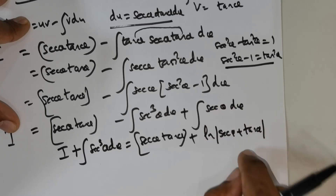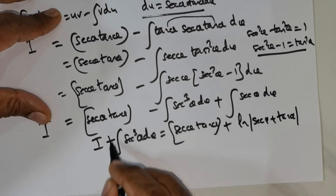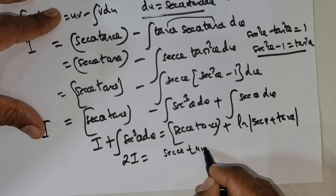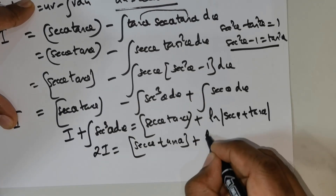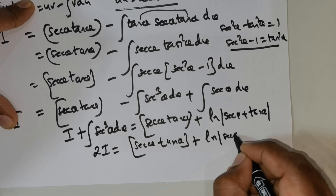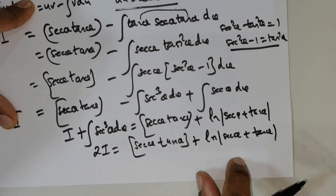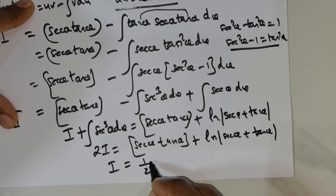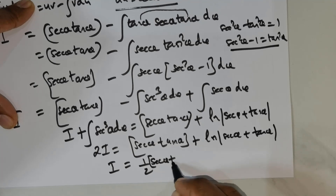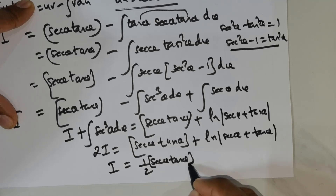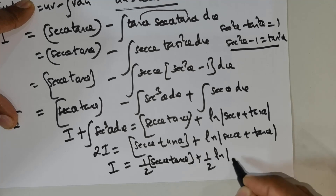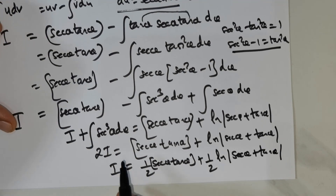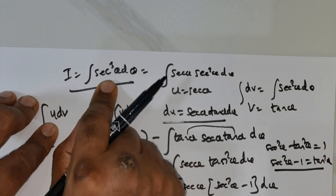So this is 2 times I equal to secant theta tan theta plus ln|secant theta plus tan theta|. Dividing both sides by 2, I is equal to one half times secant theta times tan theta plus one half times ln|secant theta plus tan theta|. So this is the result for the integral of secant cube theta.